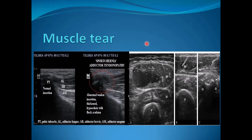Muscle tears are one of the most common pathologies, particularly in athletes. This is an example of the rectus femoris muscle showing an intersubstance partial thickness tear causing a hematoma. Another example shows a calcific lesion within the vastus intermedius muscle compared to the normal side, denoting an old calcific insult.